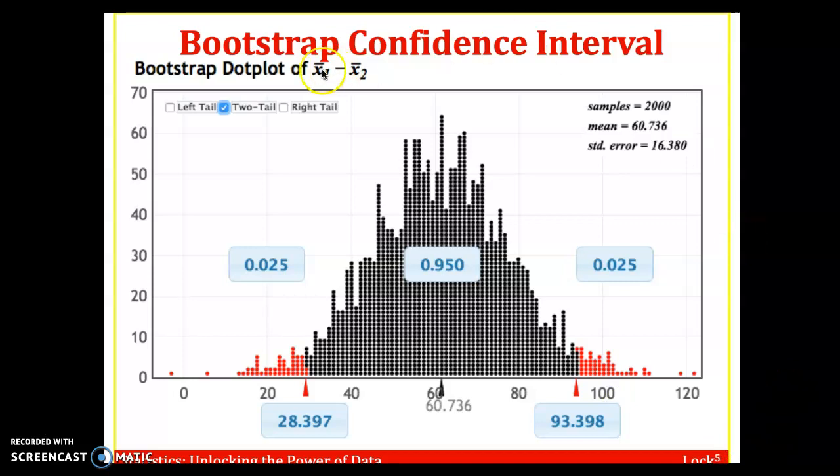So going back to the bee's waggle dance, the number of circuits. That mean difference was 60. We saw on the last slide. We could do a bootstrap distribution simulation to create this distribution.